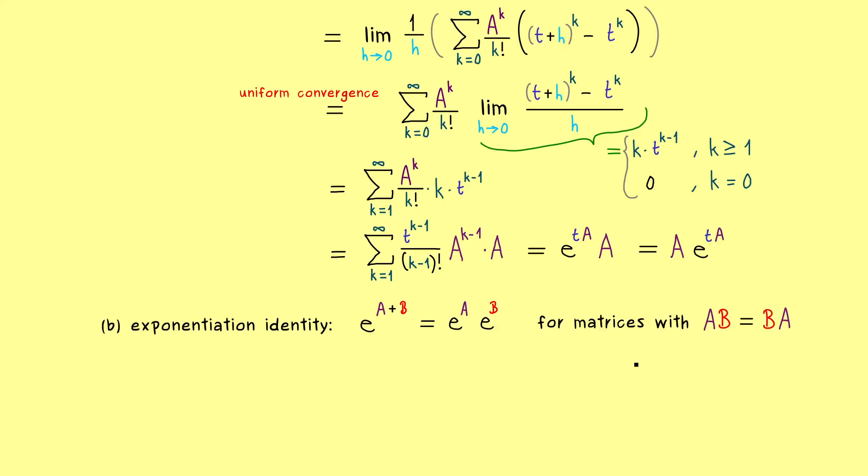More precisely we have to put in that AB is equal to BA. So please remember this important fact, in general for two matrices we don't have this exponentiation identity. However since we have it for commuting matrices, we can use it to calculate the inverse of e to the power A.